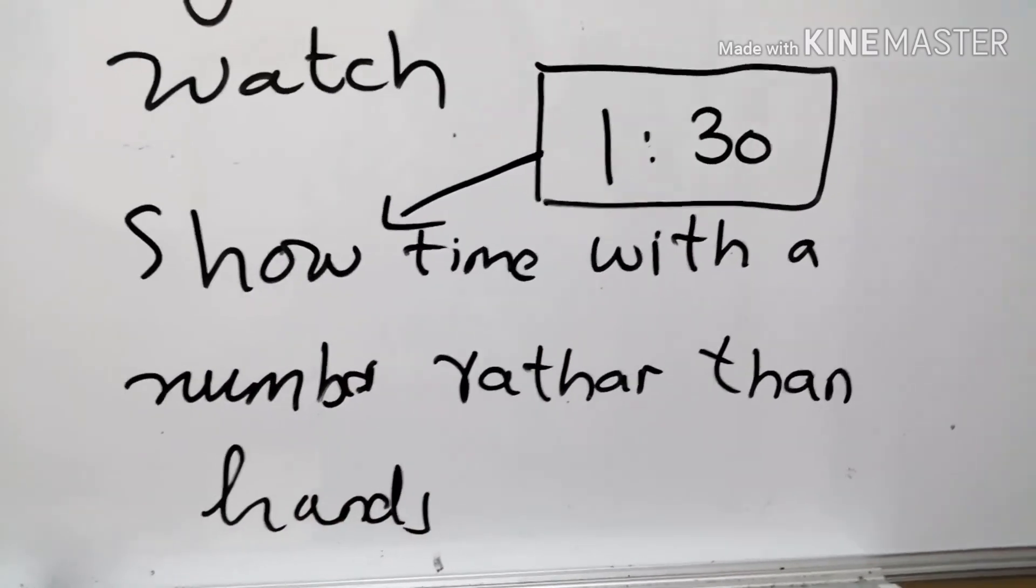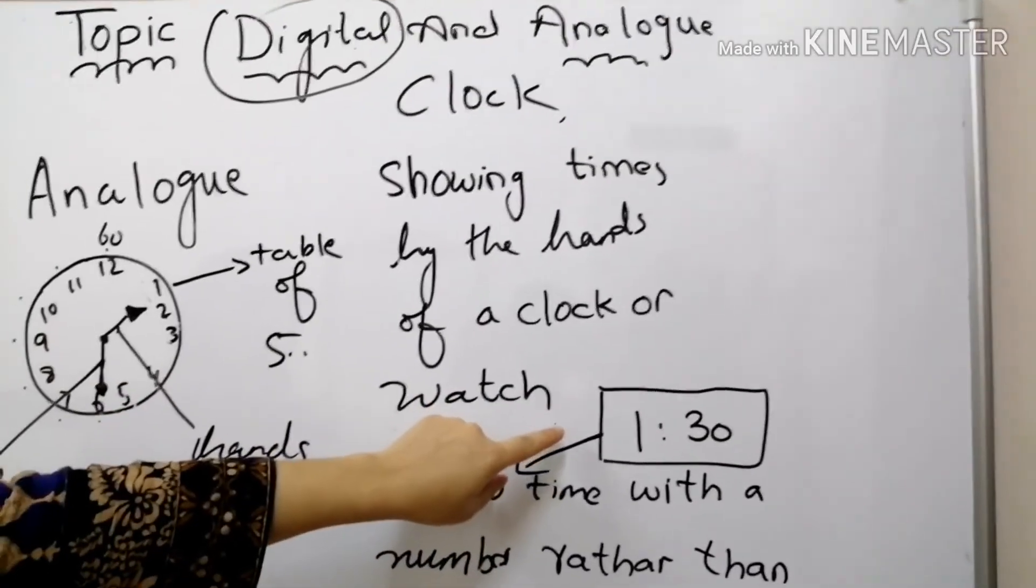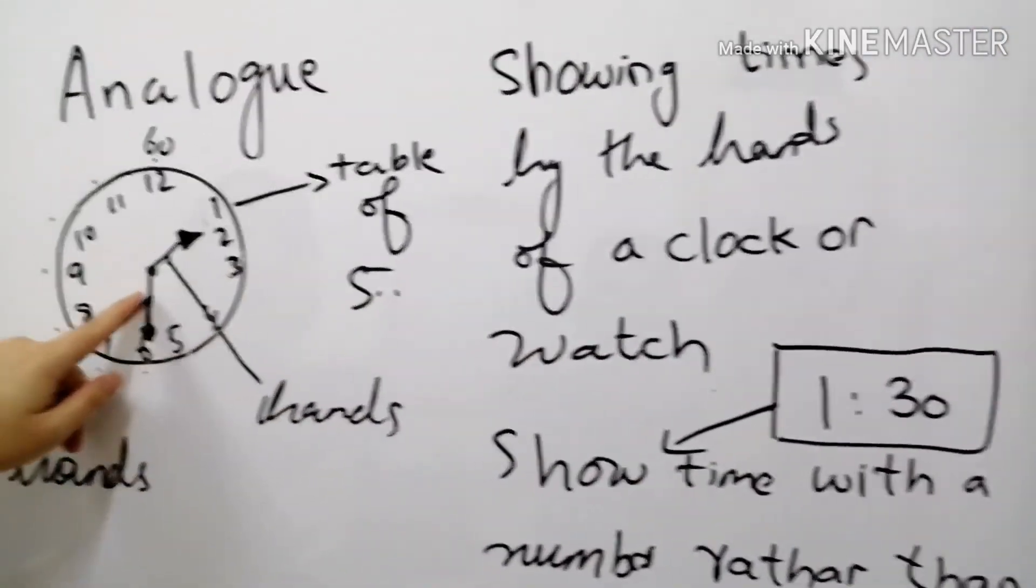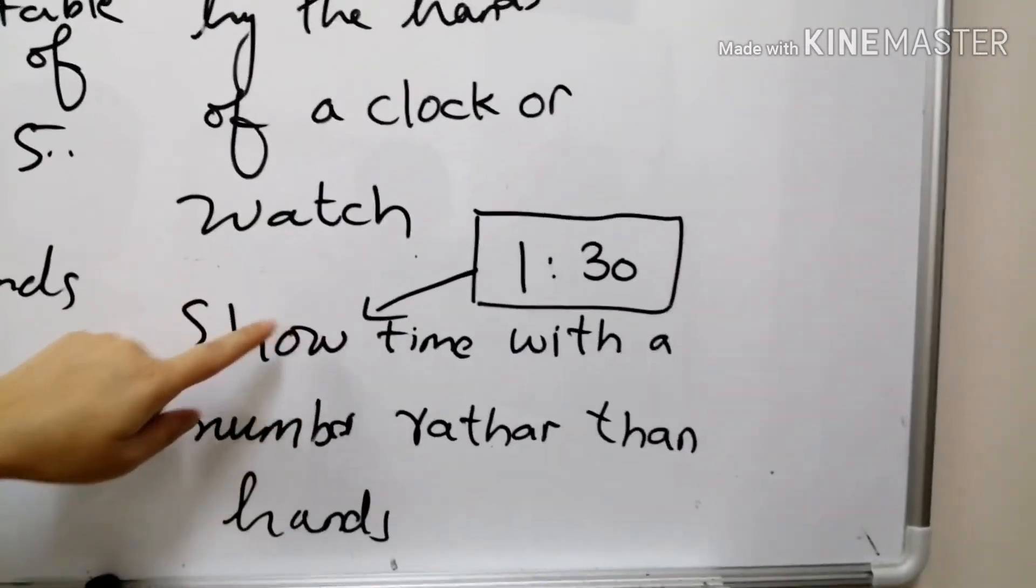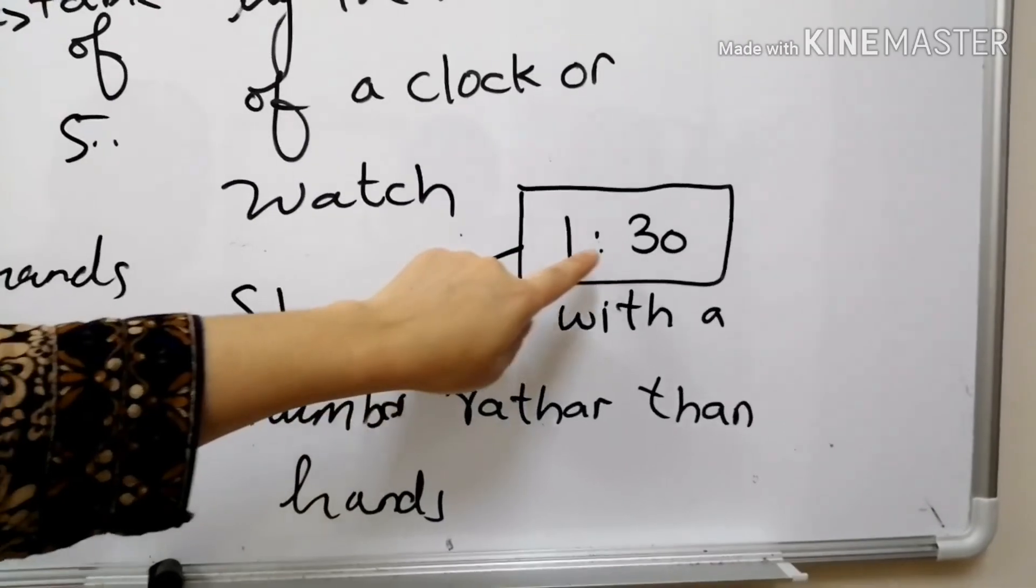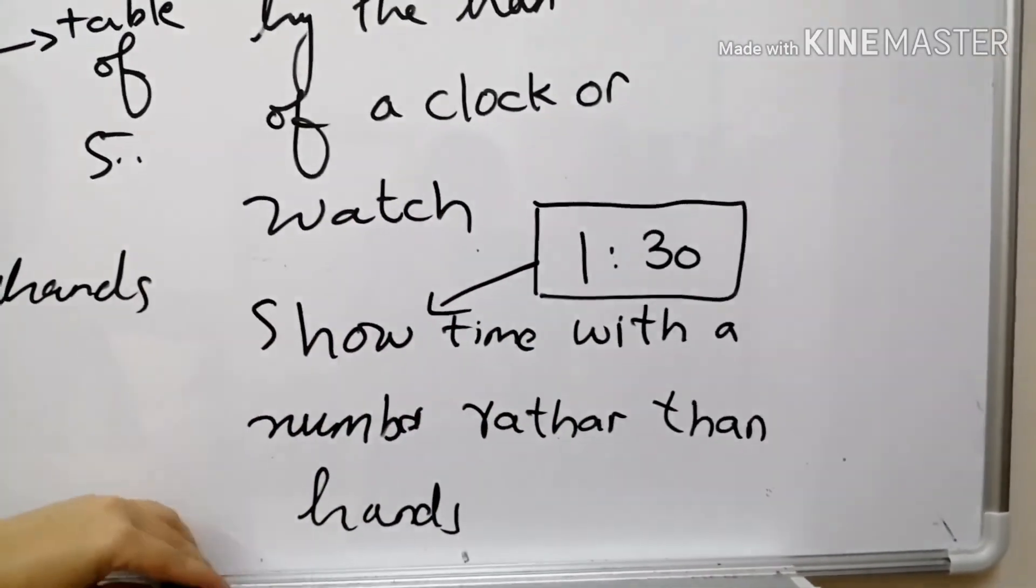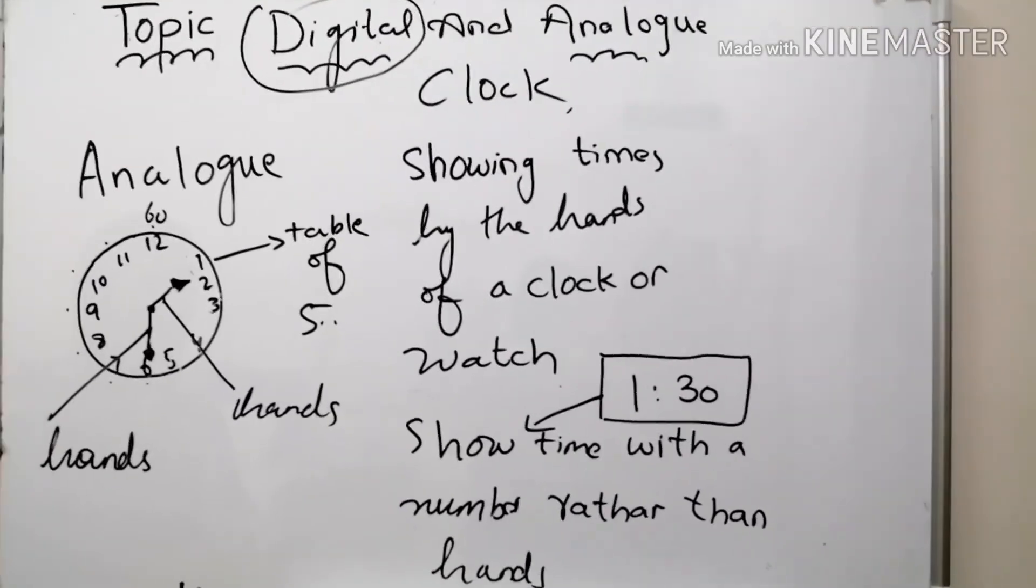Okay so keep it in your mind that this is the difference between analog clock and the digital clock. Analog clock shows the time with the help of its hands. While on the other hand this digital clock shows time with the numbers. These are the numbers, there is no hand. So I hope you understand. I will upload the homework for you today. Thank you so much for watching the video. Thank you goodbye.